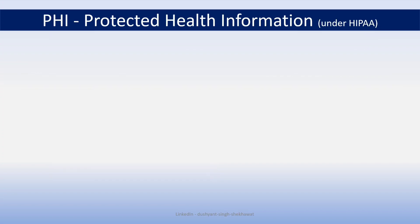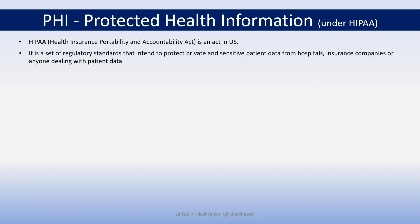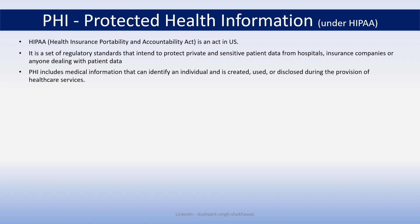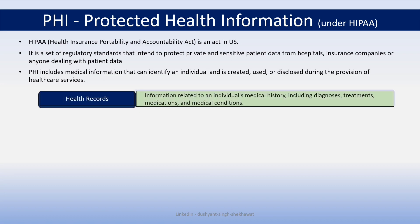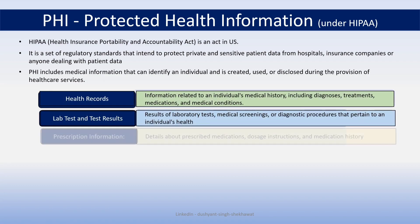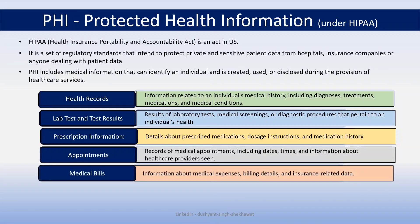Moving ahead, we have protected health information, or PHI, under HIPAA. As the name clearly states, it is related to your health. HIPAA is an act in the US — a set of regulatory standards that intend to protect private and sensitive patient data from hospitals, insurance companies, healthcare providers, or anyone dealing with patient data. PHI includes medical information that can identify an individual and is created, used, or disclosed during the provision of healthcare services — which can include your health record, health history, any services rendered, lab tests, test results, prescriptions, appointments, and medical bills.